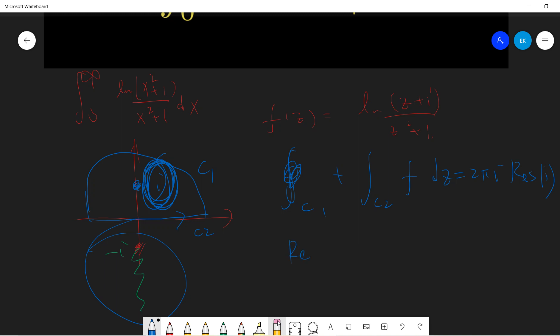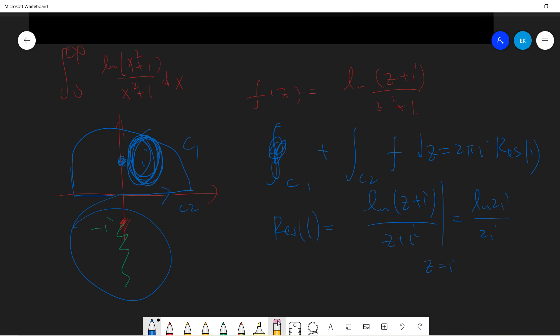So the residue is very simple. Simple pole. So just z minus, z plus i, and the log z plus i. And pick up z equals i. So it's log 2i over 2i. So remember that we already pick up branch cut. So this is log 2 plus log i, which is pi divided by 2i.